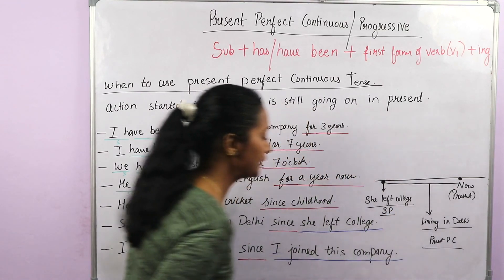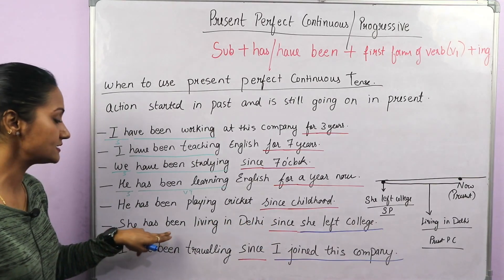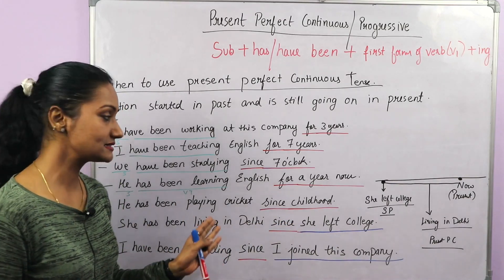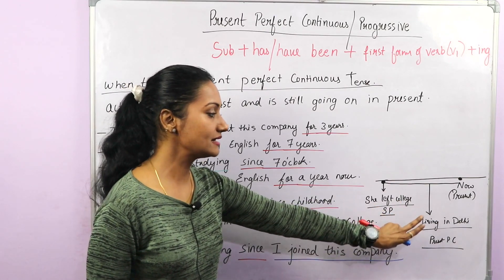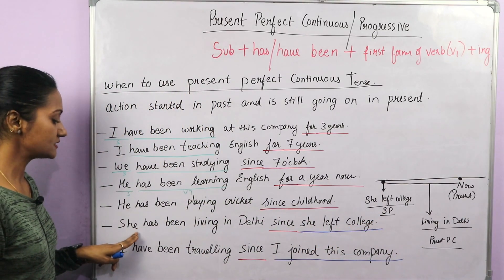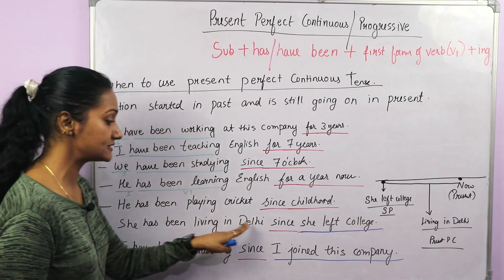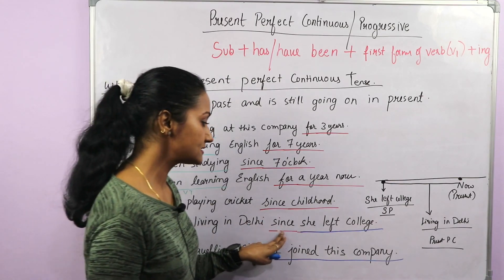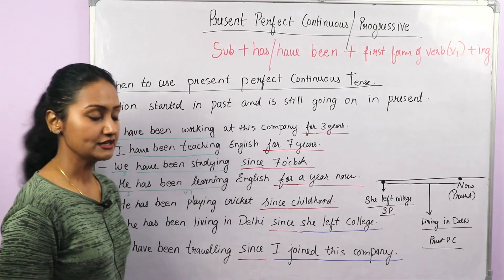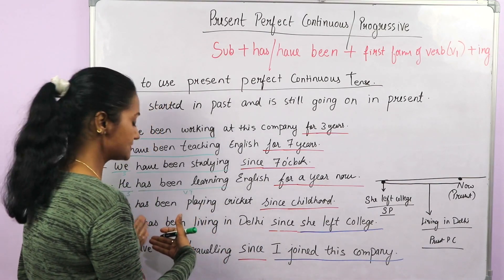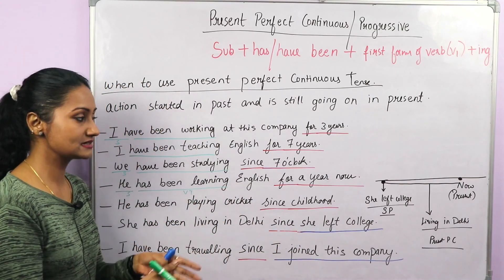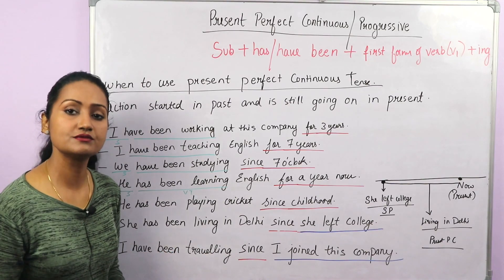'She left college' started and ended in the past, so it is simple past tense. 'She has been living in Delhi' — the action of living started at that past point and is still going on in the present, so it is present perfect continuous. We can frame it as: 'She has been living in Delhi since she left college.' When an action happened in the past and at that time another action started which is still going on, we use this combination.